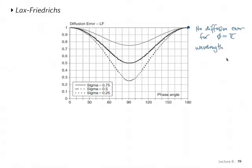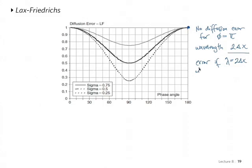Recall that phi equal to pi is related to a wavelength of 2 delta x, which we derived in the previous slide. So basically any errors that occur at a wavelength of 2 delta x are not going to be damped by the solution — that's 2 mesh points — which has to do with the even-odd decoupling that I was explaining before. Any errors with that wavelength will not be damped.